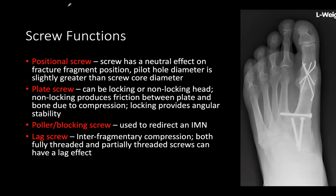A positional screw has a neutral effect — it does not compress or bring two bones together. It is essentially placed after manually positioning the fragments, and the screw just holds things in that neutral position.